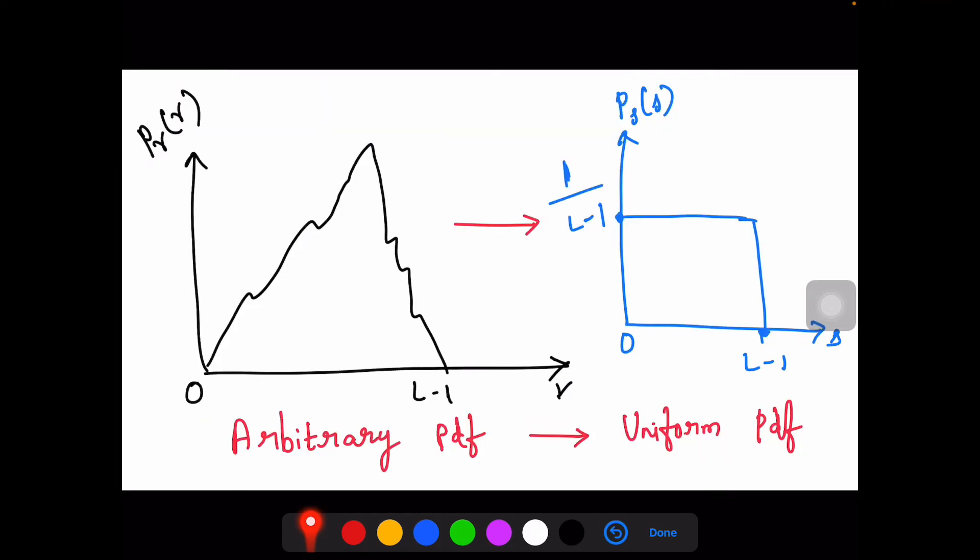By this you will see that initially the original image has an arbitrary period in this fashion. After it is equalized, you can see that it is well distributed in a uniform way with 0 to L minus 1 and 1 by L minus 1 as a peak.